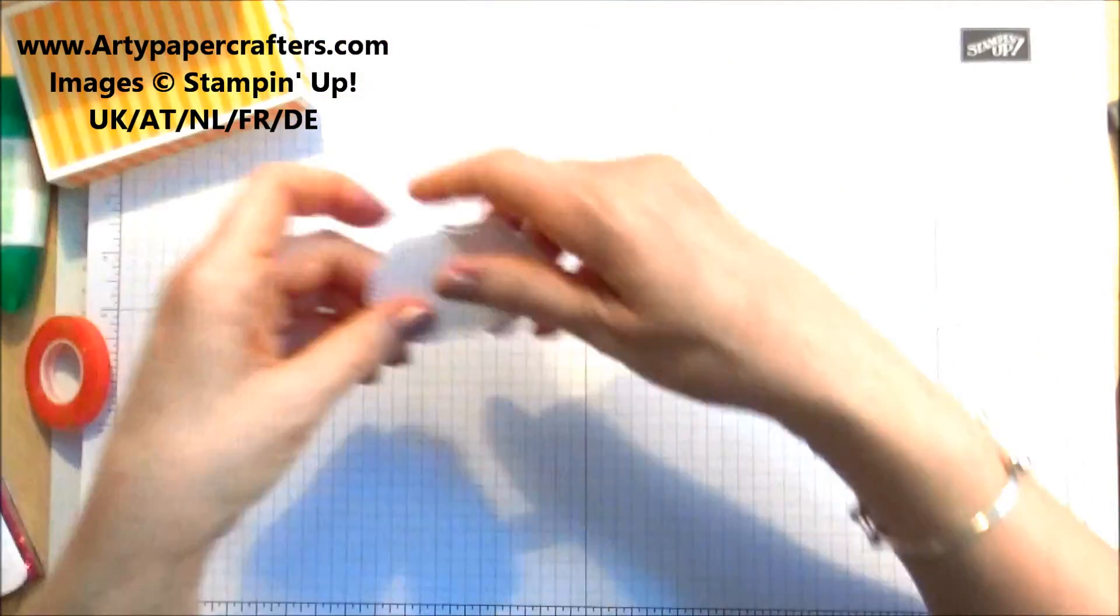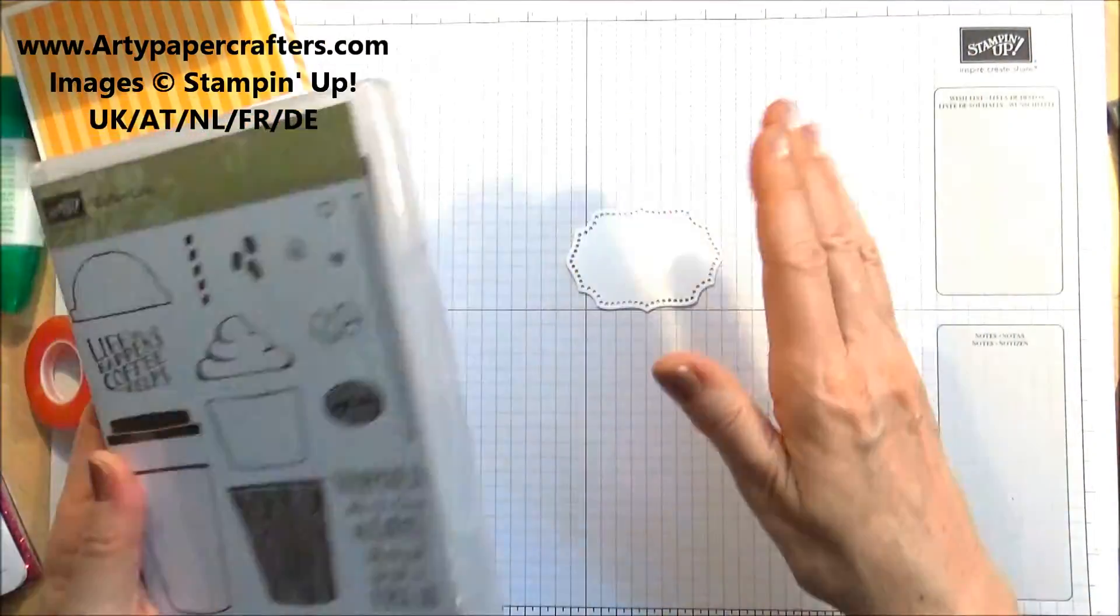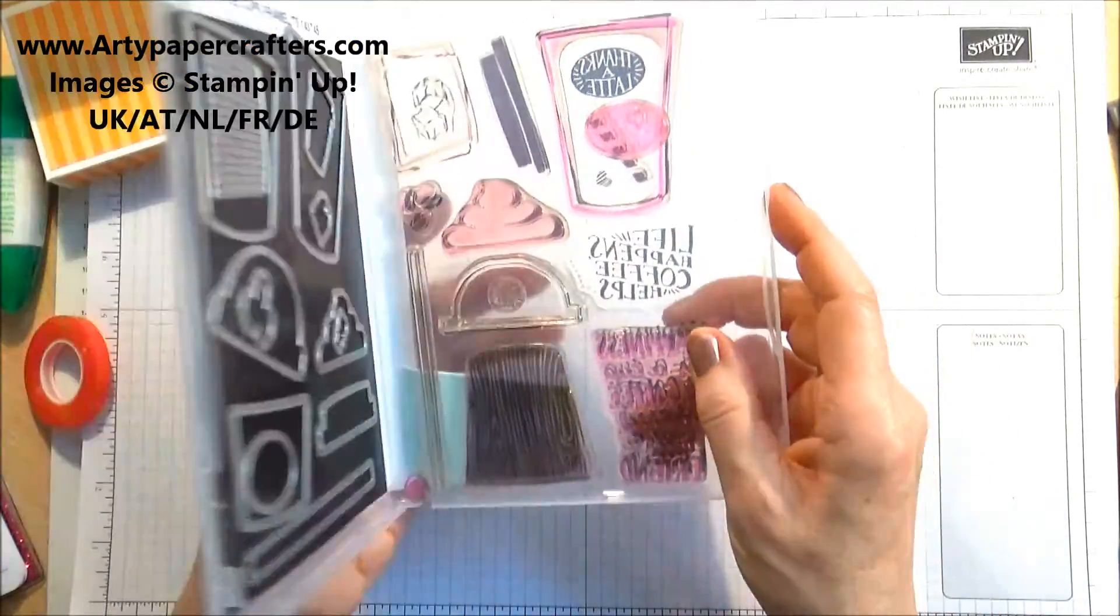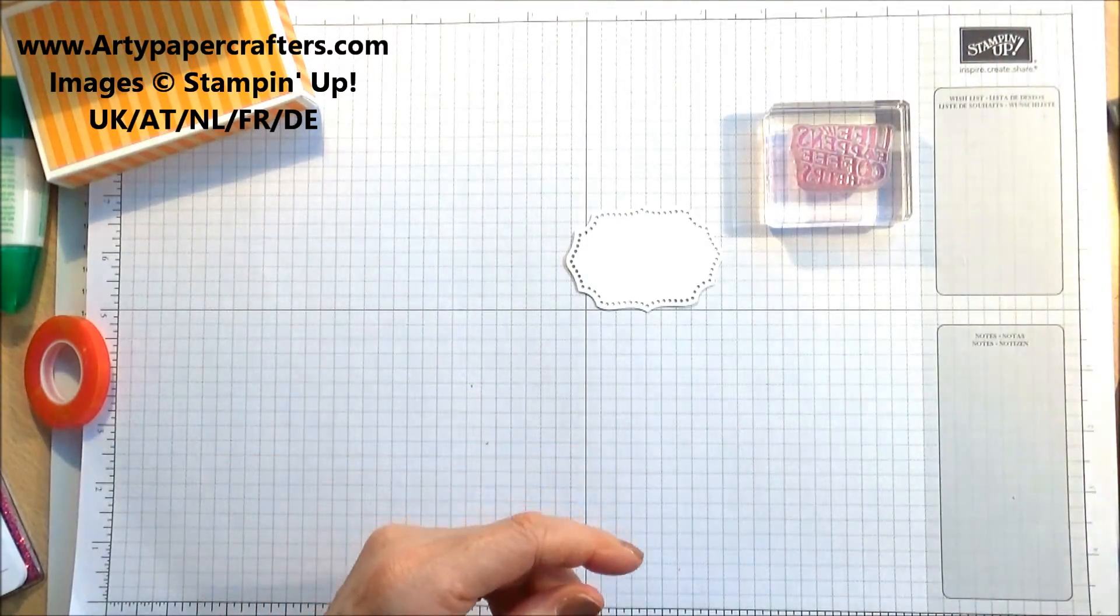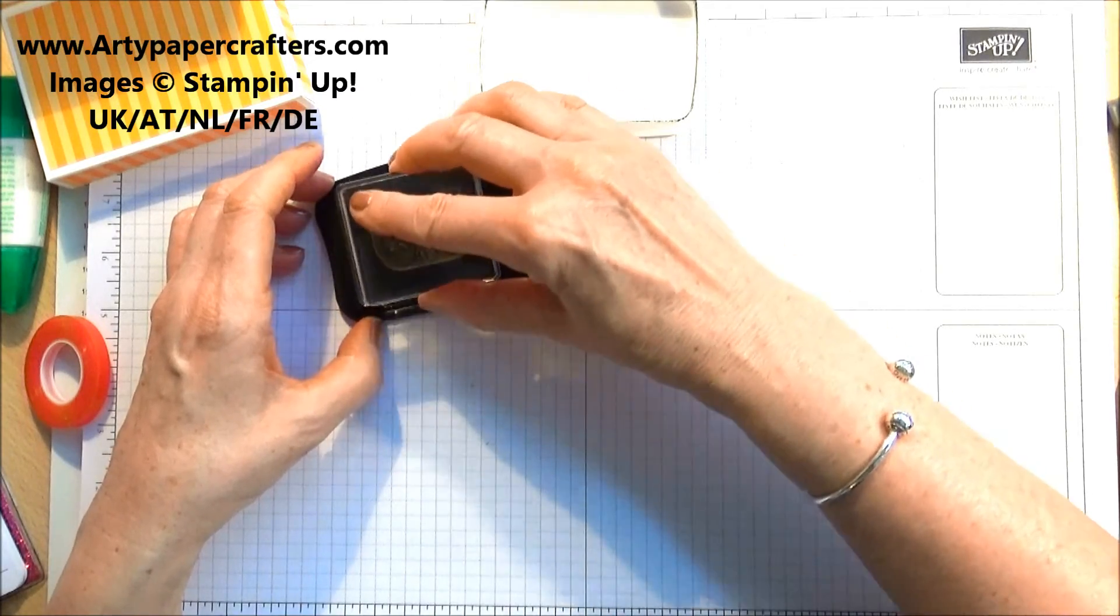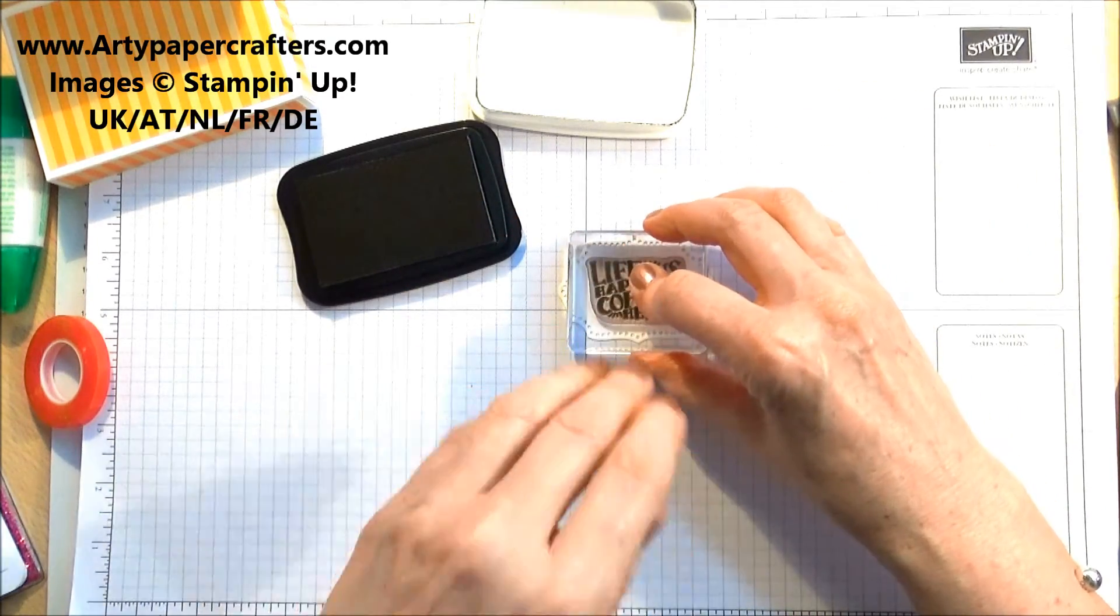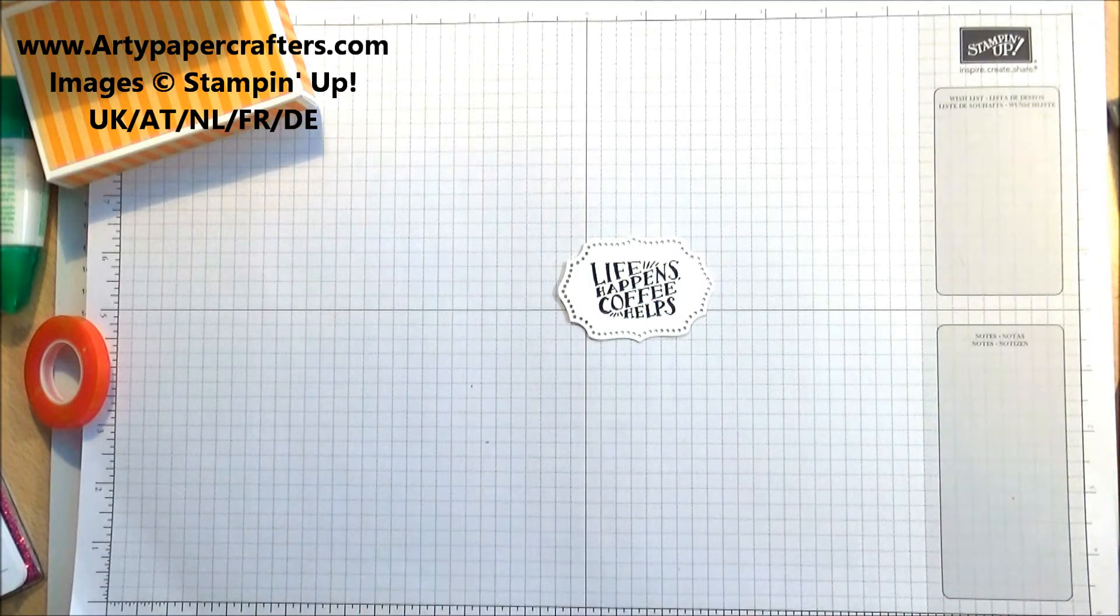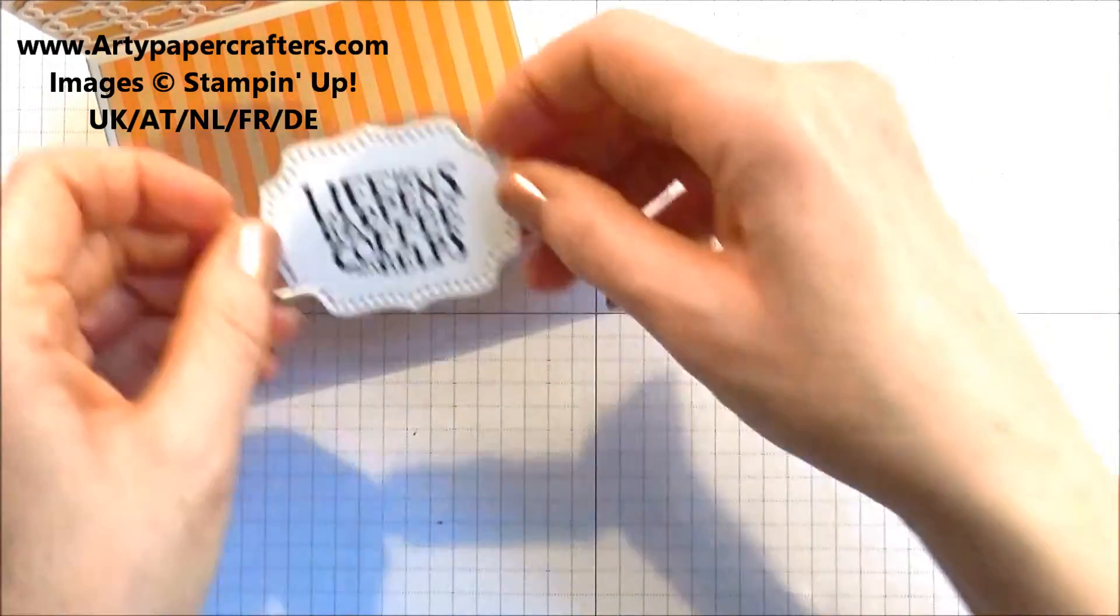Then we're going to do just a bit of stamping. Now what I wanted, I wanted something associated with coffee and biscuits. So I picked out my trusty coffee cafe. This is still current in the catalogue. And I've prepped up on my block. Life happens. Coffee helps. So that's on my block. And I've got my memento ink. And down on there. Perfect. So let me bring you down so that you can see a bit more of a close up as we finish of our box.